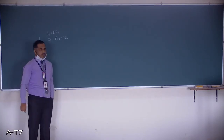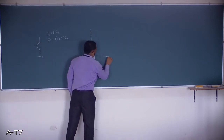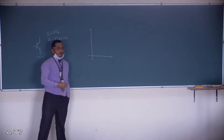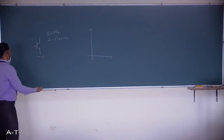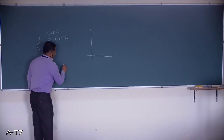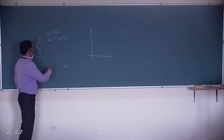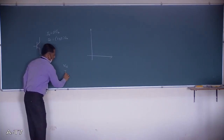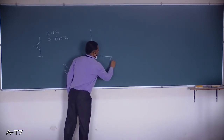Next, we discussed the DC load line and the output characteristics. We have two parameters: VCE, the voltage at the collector with respect to the emitter, and the collector current IC. We plotted VCE versus IC and made several observations.